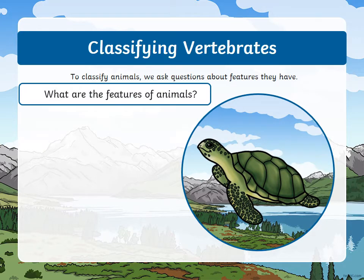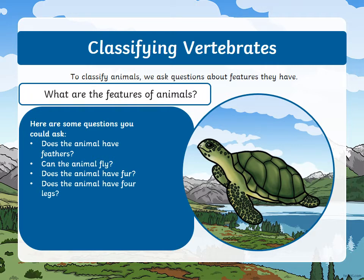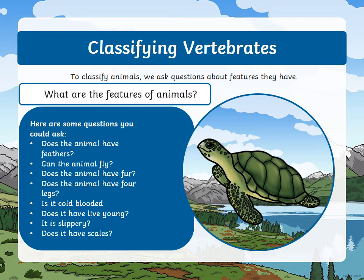To classify animals, we ask questions to help us identify some of the features. We have a turtle here, so we're going to ask some questions about it. Does the animal have feathers? No. Can the animal fly? No. Does the animal have fur? No. Does the animal have four legs? Yes. Is it cold-blooded? Does it have live young? Yes. Is it slippery? No. Does it have scales? No.